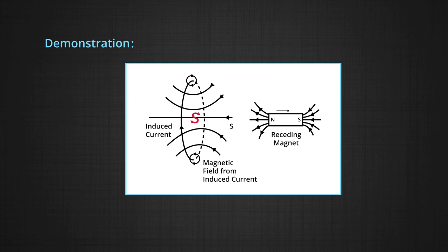Similarly, if a north pole is moved away from the loop, the magnetic flux decreases. The induced current will be in the clockwise direction according to the right hand rule, and a south pole will be induced. So the loop will try to oppose the cause — the receding flux — and will induce current so as to increase the flux.